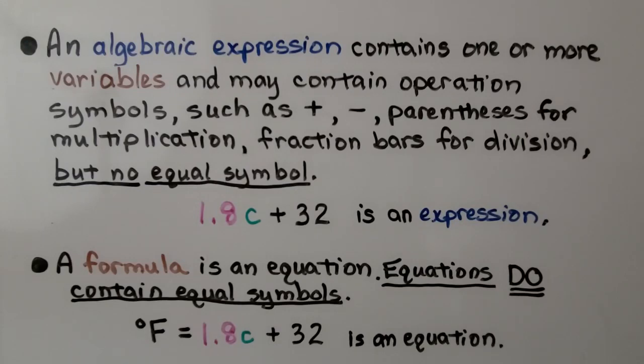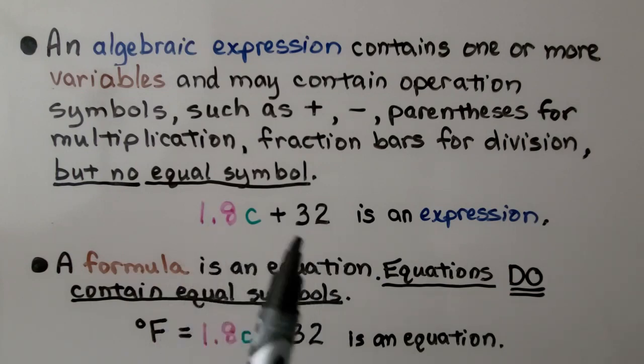An algebraic expression contains one or more variables and may contain operation symbols such as a plus or minus, parentheses for multiplication, fraction bars for division, but no equal symbol. One and eight tenths C plus 32 is an expression. There's no equal sign. A formula is an equation. Equations do contain equal symbols. Here we have it as an expression with no equal sign, and here we have it as an equation because there's an equal sign. This is degrees Fahrenheit equals one and eight tenths C plus 32. Because we have an equal symbol here, this is an equation, and it's a formula to convert degrees Celsius to degrees Fahrenheit.